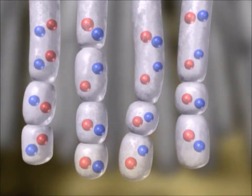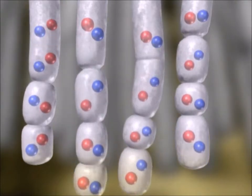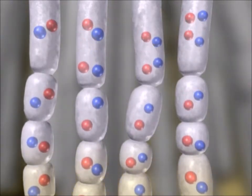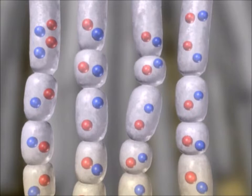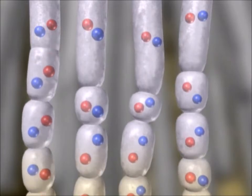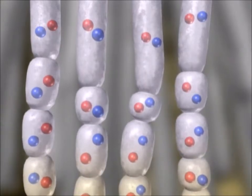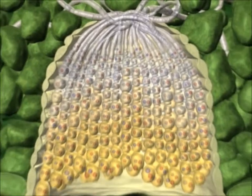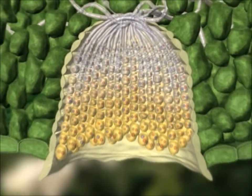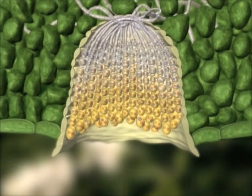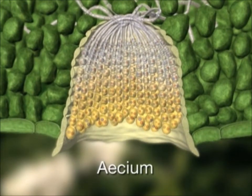The aeciospores develop in the form of chains. They are produced within an open cup-like organ, the aecium.